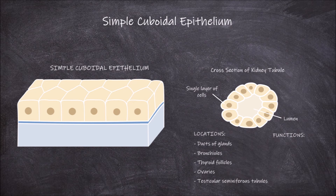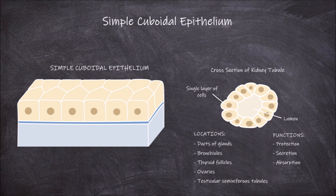In terms of function, like most epithelium, this type provides some level of protection. The main functions of simple cuboidal epithelium are in secretion and absorption. This is why it is found in areas where secretion and absorption occur, such as in the glands.